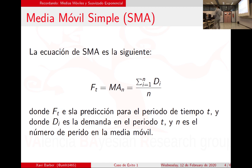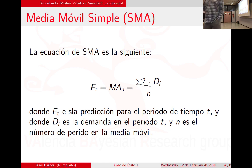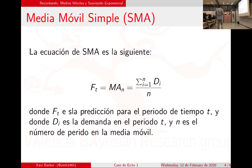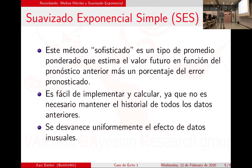Si mi tienda abre 6 días a la semana, mi media móvil debería ser de 6, no de 7, porque el domingo no abre. Eso hay que tenerlo en cuenta cuando hagáis una media móvil: es una forma de estimar muy sencillita pero que requiere un poquito de cuidado.